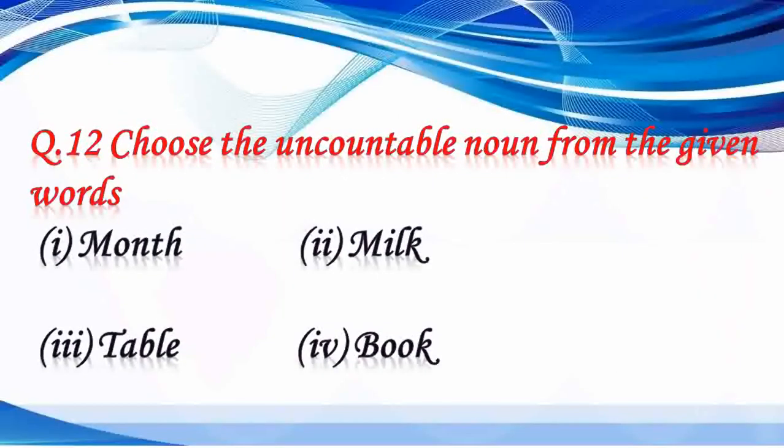Question number 12: choose the uncountable noun from the given words. Option 1: month. Option 2: milk. Option 3: table. Option 4: book. Month, table, and book can all be counted, so they are countable nouns. But milk cannot be counted — it is an uncountable noun. So the right answer is milk.